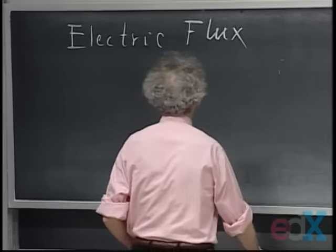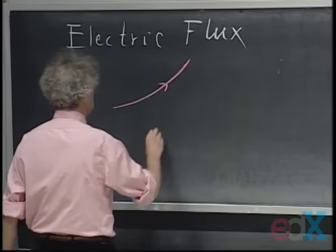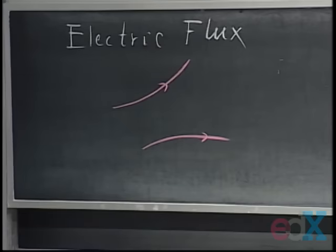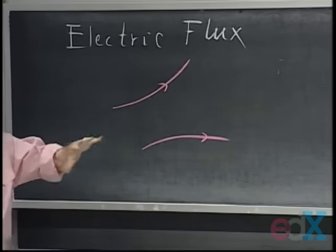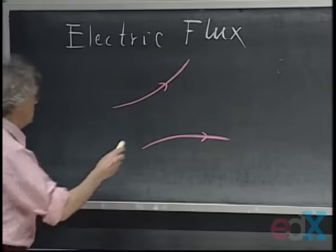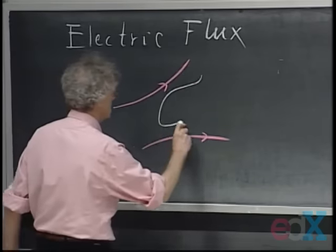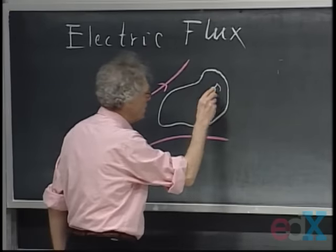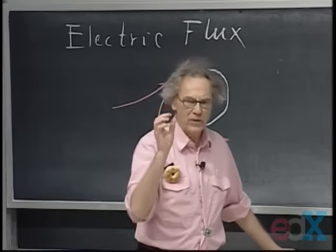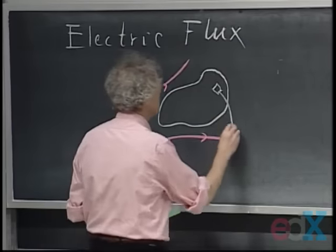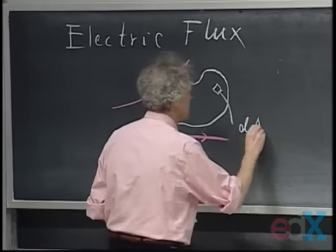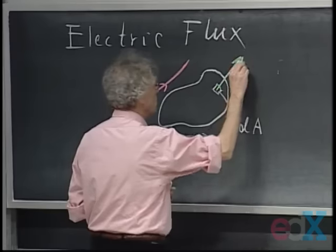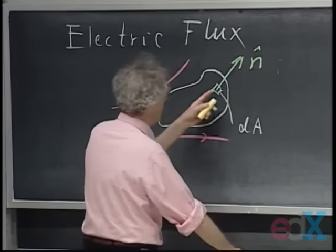Suppose I have an electric field, and I bring into that electric field a surface — an open surface, like a handkerchief or a piece of paper. I carve this surface up into very small surface elements, each with size dA — that's the area, a teeny-weeny little area — and let this be the normal N-hat, the normal on that surface.